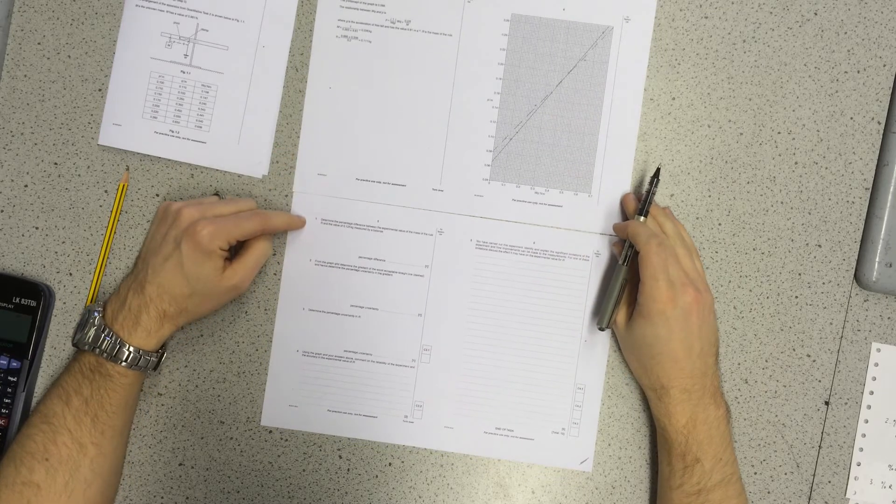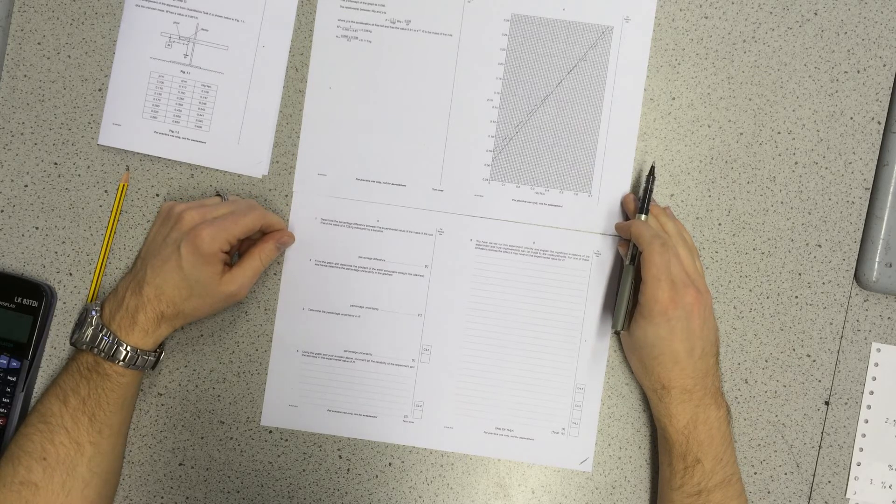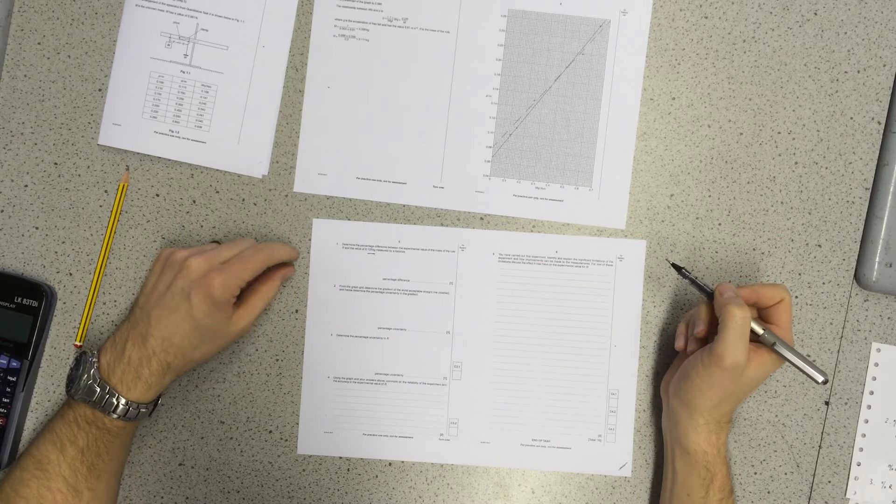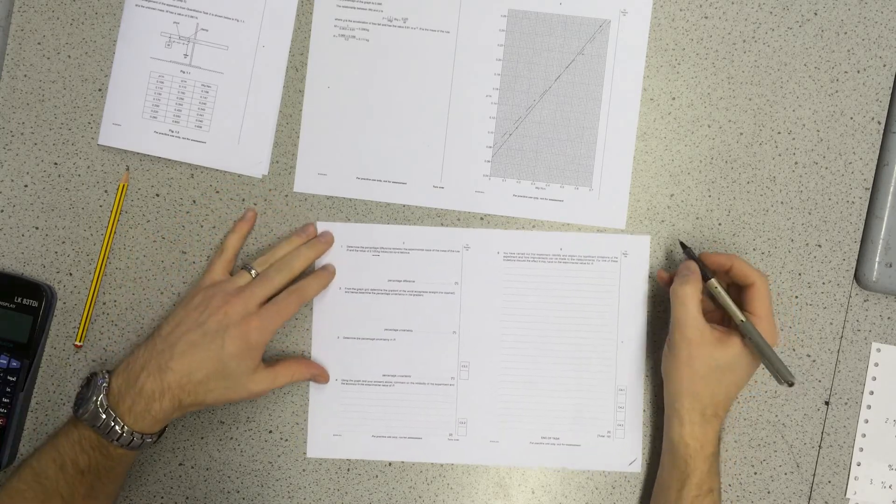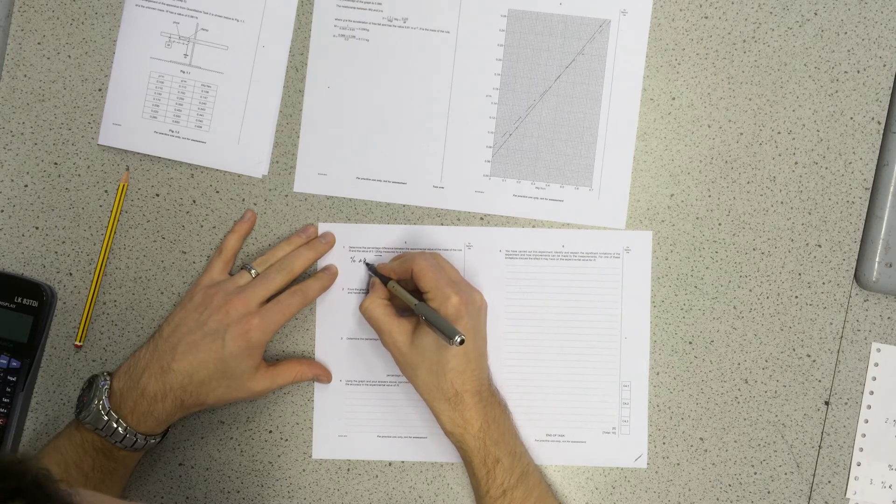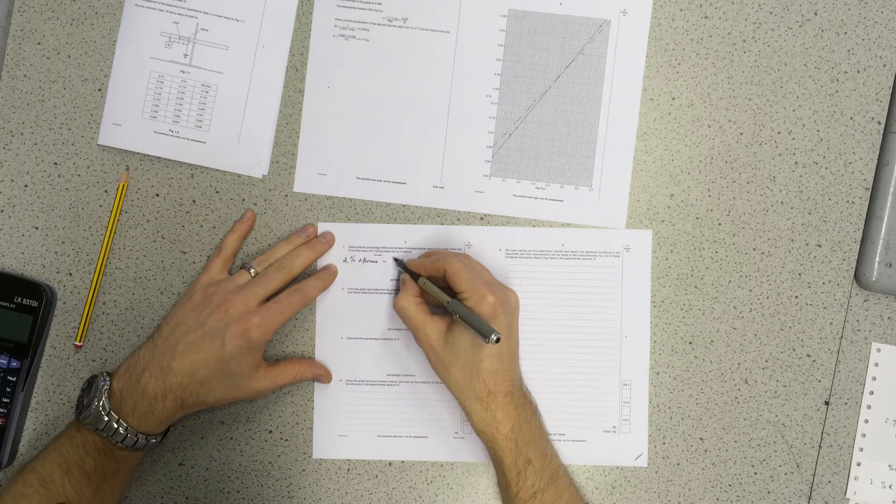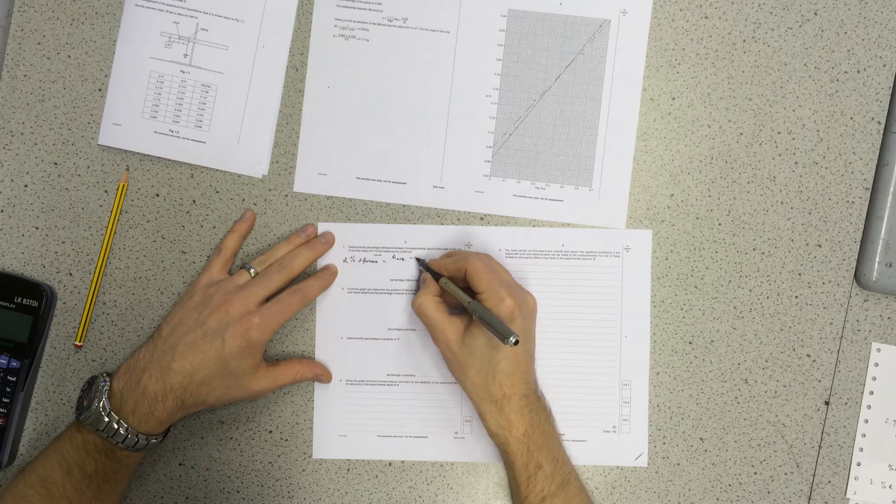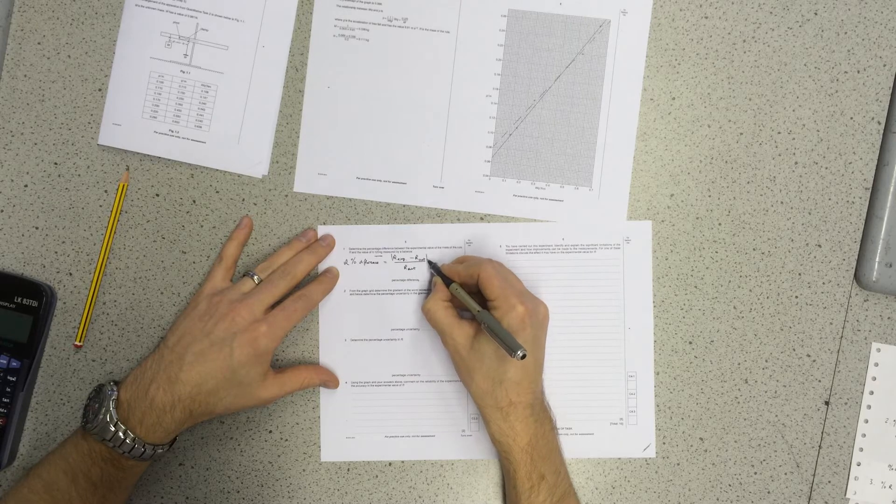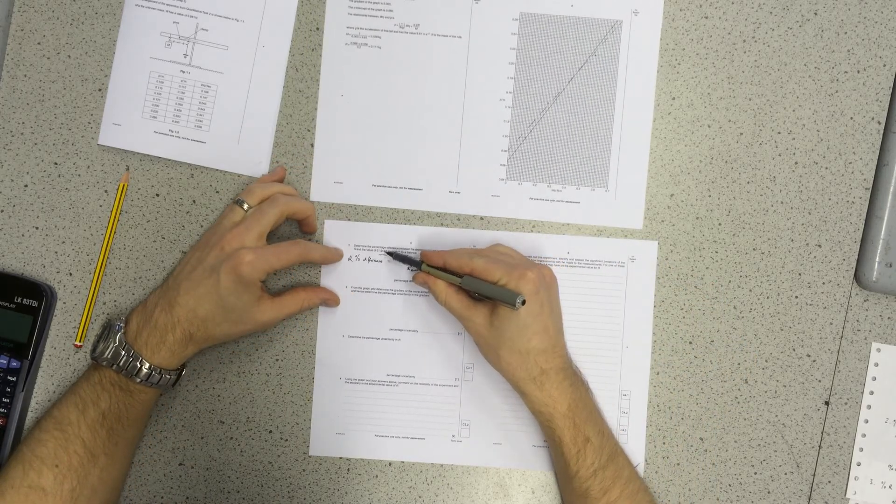Question one is determine the percentage difference between the experimental value of the mass of the ruler r and the value of 0.125 kilograms measured by a balance. You need to understand that the 0.125 kilograms value that was given in the question, that's the actual value or the expected value. To work out the percentage difference, I need to do the experimental minus the actual over the actual. It's only the magnitude that is important, so I'll do the modulus times 100. So I have the actual value here, 0.125.